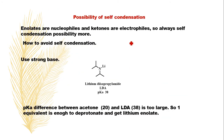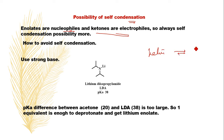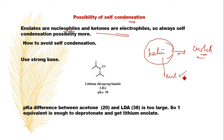The next topic is the possibility of self-condensation. If enolates are considered as nucleophiles and ketones are electrophiles, and since ketones and enolates are always in equilibrium, a ketone acting as electrophile and the enolate coming from the same ketone acting as nucleophile means self-condensation can take place. How to avoid this self-condensation?